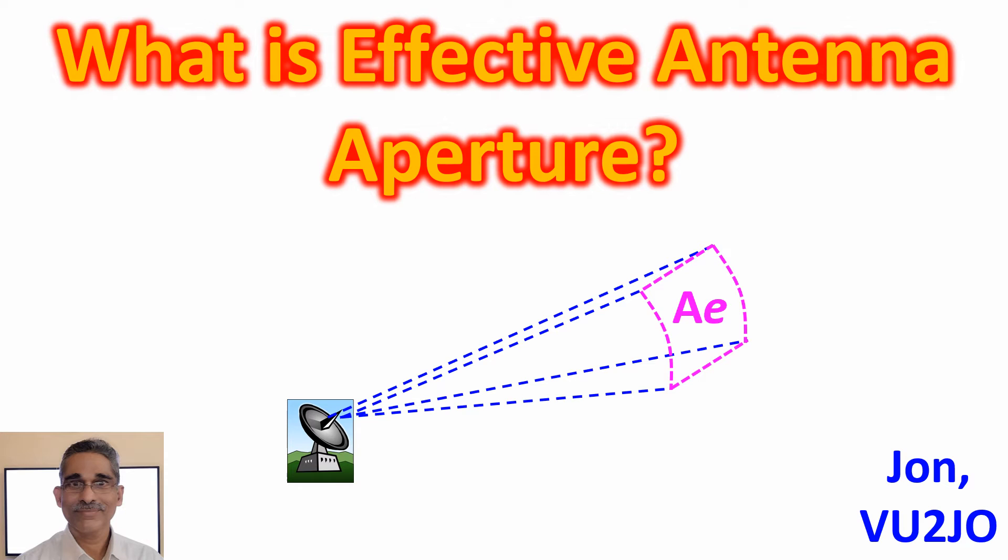Effective antenna aperture can be considered as the area from which the antenna receives electromagnetic radiation which is having the same polarization as the antenna. It can be considered as a measure of how effective the antenna is in receiving power of electromagnetic radiation.